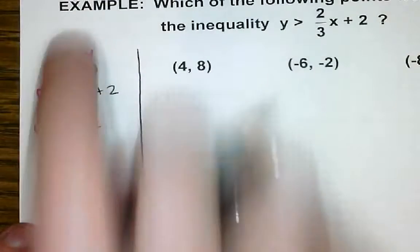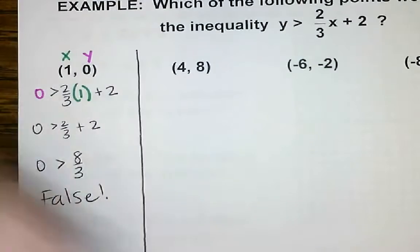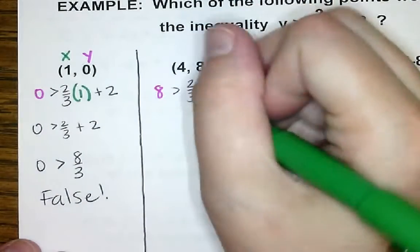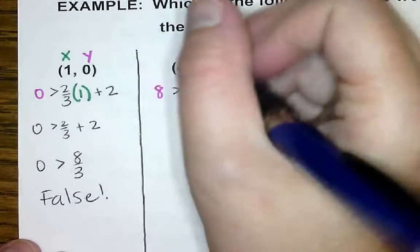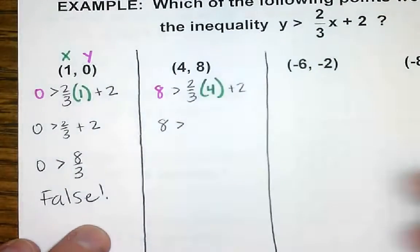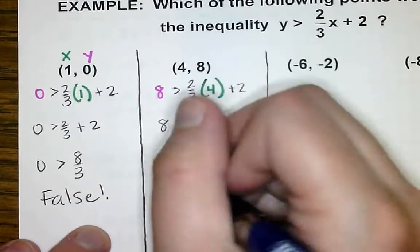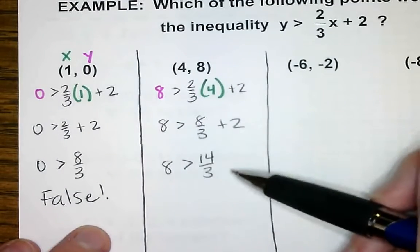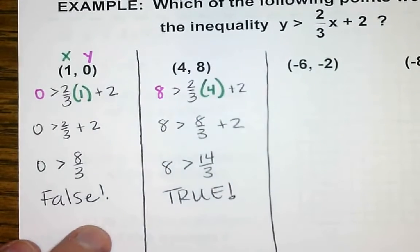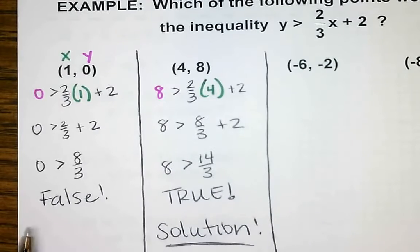We want to see which one is a solution, so we do the same thing. 8 is greater than two-thirds times 4 plus 2. Two-thirds times 4 is 8 thirds, plus 2 is 6 thirds, so that's 14 thirds — which is 4.667. Is 8 greater than 14 thirds? That is true! 8 is bigger than 14 thirds, so that is a true statement and this point is a solution.